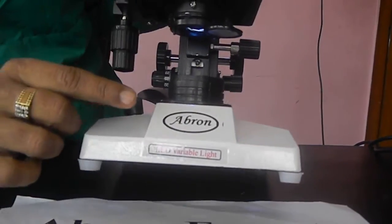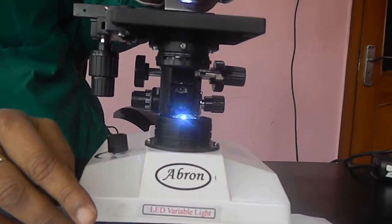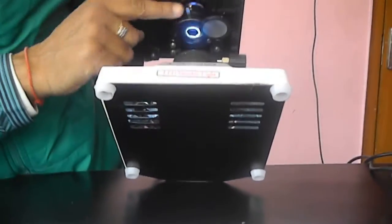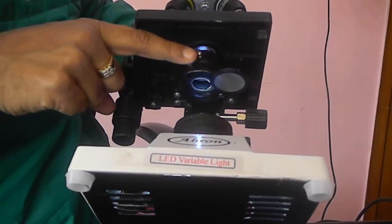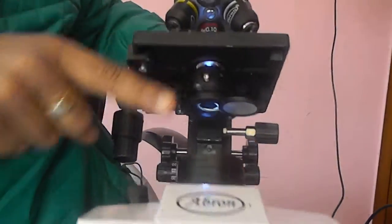It is only for dimming the light and intensity. Then there is one iris diaphragm. Here you can see this closes and opens. You have to keep it just in the middle for the start.